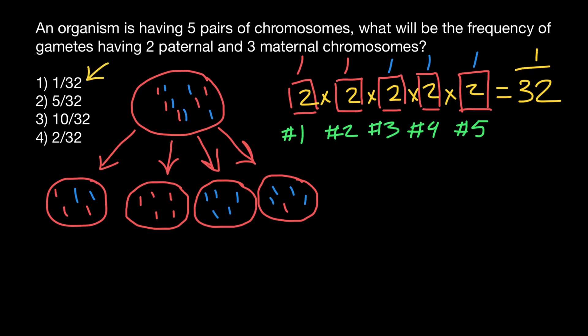But this is wrong. Why? Because in our problem, the order of events is not given. It just says two paternal and three maternal, but no specific order is given. That answer would be correct if the order were specified — for example, if the question asked for the probability that chromosome one is paternal, chromosome two is paternal, and all the rest are maternal. But order is not given in our problem, so a different approach is needed.